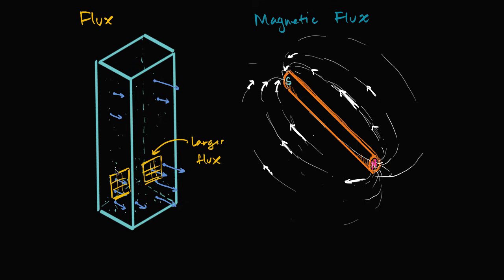What if we were to take that same net and move it up to this high altitude right over here? Well, the velocity of the molecules are the same and they're going in the same direction, but there's just fewer of them, so you're going to have fewer molecules traveling through the surface in a given amount of time — so this is going to have smaller flux, and this is all relative to my first one.